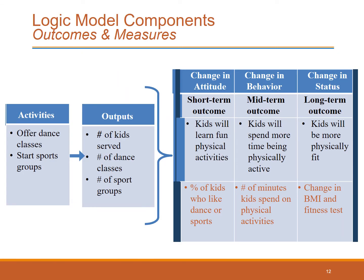Here is another example of writing outcomes by short-term, mid-term, and long-term. In an intervention to increase children's physical activity, a program is offering dance classes and starting sports groups. They wish to track their program by measuring the number of kids served, the number of dance classes offered, and the number of sports groups. In their short-term outcomes, they may have a goal of changing attitudes: kids will learn fun physical activities, and they decide to track the percentage of kids who like dance or sports. In mid-term outcomes, they hope to see a change in behavior — kids will spend more time being physically active. To track this, they measure the number of minutes kids spend on physical activities after involvement in the program compared to baseline measures.